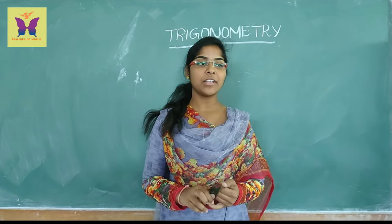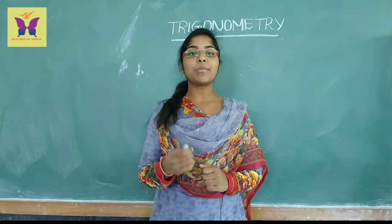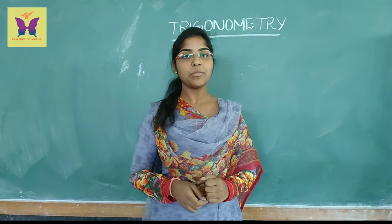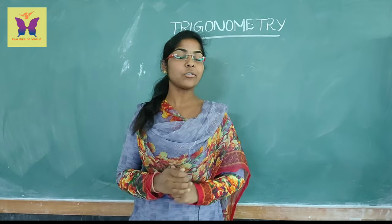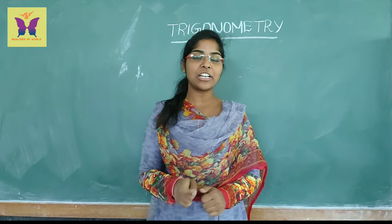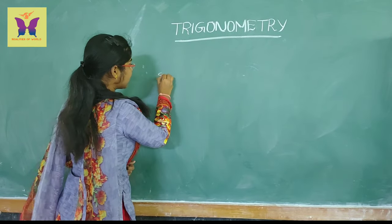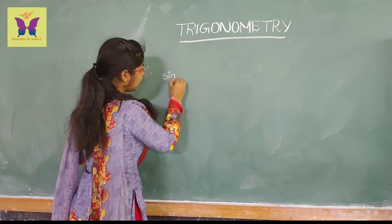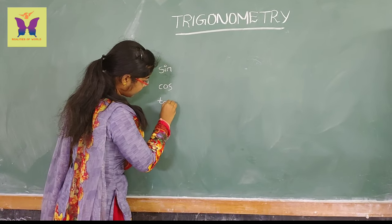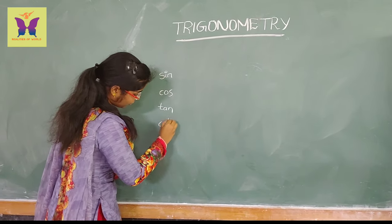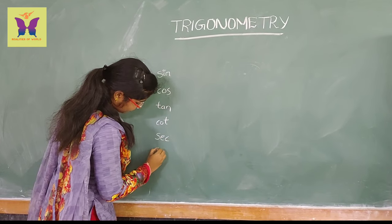In trigonometry, we are talking about sin 0 to 90 degrees and the values very easily. We are talking about sin and cos. First, we are talking about the six trigonometric functions: sin, cos, tan, cot, sec, and cosec.